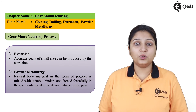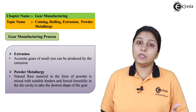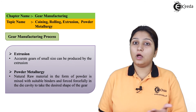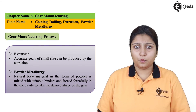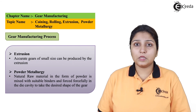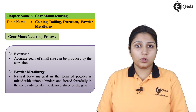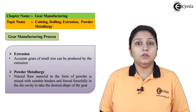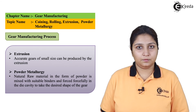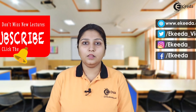So these are the four processes in which gears are produced. Gears are also produced by other methods like shaping, grinding, honing, lapping, and different operations. But unlike those, these four processes are used for making small-scale gears, also used in watches, toys, etc. Thank you for watching this video. Stay tuned with eKira and do subscribe to the channel eKira.